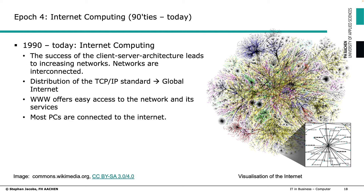On top of the internet, the World Wide Web became available at the beginning of the 1990s. The World Wide Web is something different from the internet itself. Just as the mouse and windows offered easier access to a computer, the World Wide Web offers easy access to the internet and its services. Today, basically all PCs are connected to the internet.